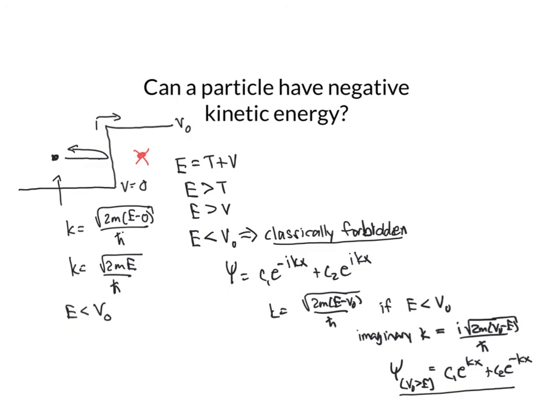And so that wave can kind of leak through that barrier and have some probability to be on the other side where it classically would never be.